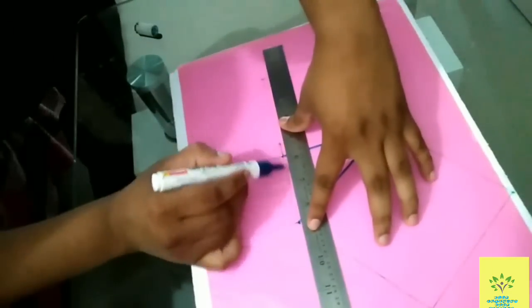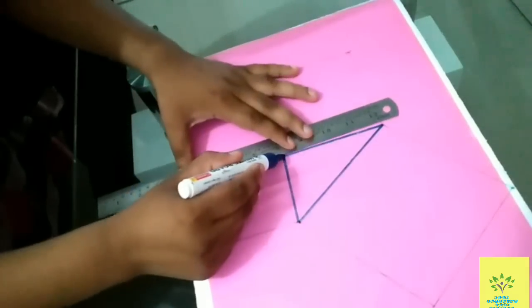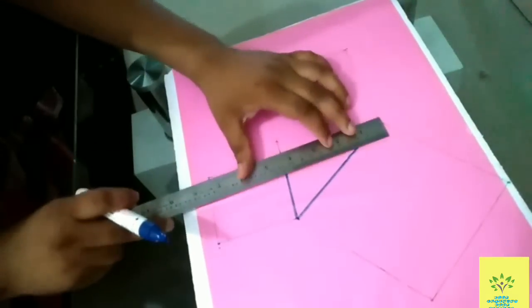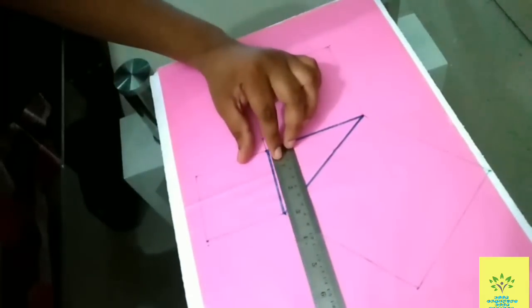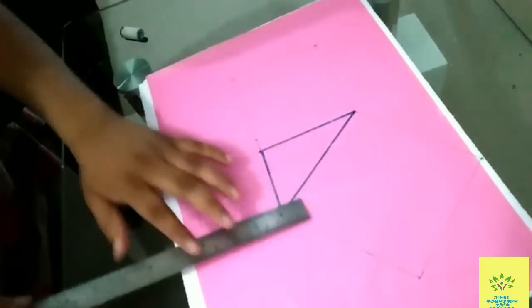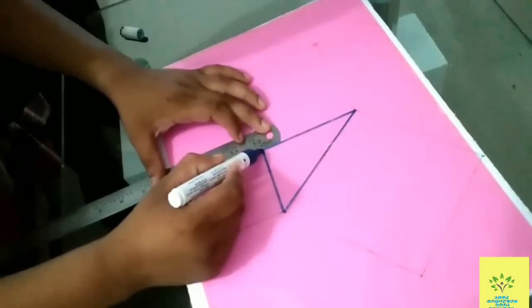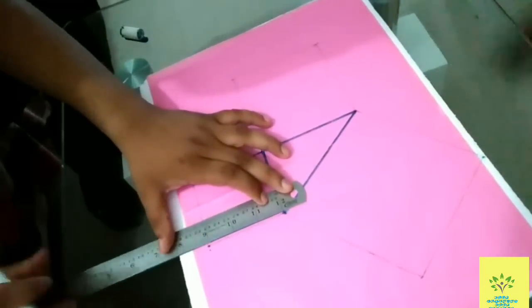First of all, on thermocol we have to paste a paper, and then we will draw a right angle triangle with altitude 4 inches and base 3 inches, so automatically the hypotenuse will be 5 inches.